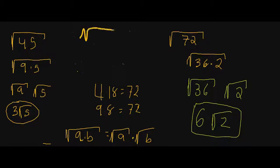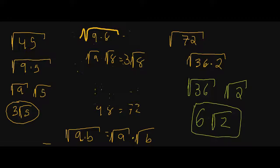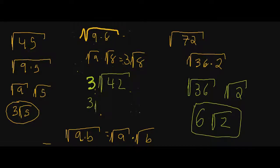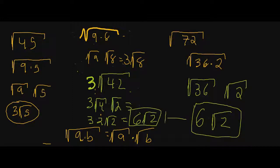Let's try the square root of 9 times 8. We get the square root of 9 times the square root of 8, which gives me 3 times the square root of 8. Now I have to reduce the 8 even further. We get 3 times the square root of 4 times 2, which gives 3 times the square root of 4 times the square root of 2. What's the square root of 4? It's 2. So we get 3 times 2 square root of 2, which equals 6 square root of 2. We still get the same answer, but it required significantly more work — many more steps to get our final answer.